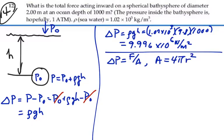Where r is 1 meter, because the diameter is 2 meters. So this area is going to be equal to 4 times pi times 1 meter squared, and that's equal to 12.57 square meters.